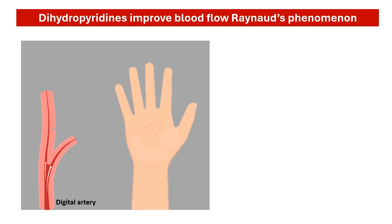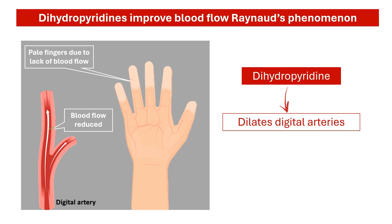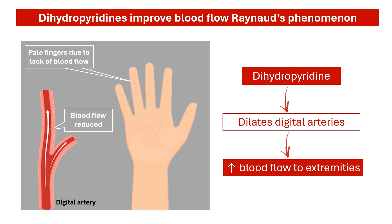In addition, dihydropyridines can treat Raynaud's phenomenon, a condition caused by narrowed blood vessels in the extremities, leading to reduced blood flow. This condition commonly affects the fingers and toes and causes them to feel cold, numb, and even painful. Dihydropyridines work by widening blood vessels, thereby enhancing blood flow to the affected areas.